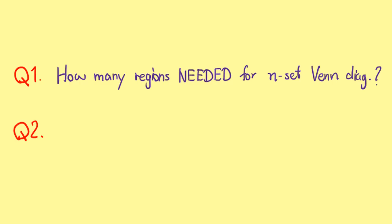The proof is quite simple. We just need to ask two questions. Question 1: How many regions do we need for an n-set Venn diagram? And question 2: How many regions can we create with n circles?